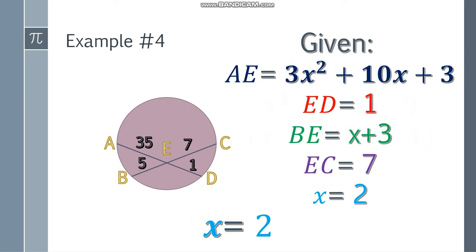If you're in doubt, let's check. So for 2, 3X square, so X square, 2 squared is 4, times 3 is 12, plus 10 times 2 is 20, and plus 3, that will be 35. So 35, this is AE. Next, ED is 1, that's given. And X plus 3, so 2 plus 3 is 5, and EC is 7.